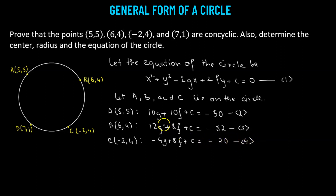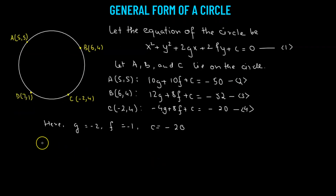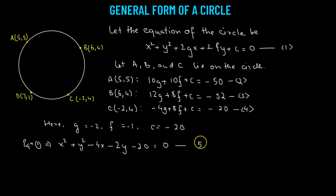Our goal is to determine the values of g, f, and c. This is a straightforward algebraic problem, so I'm leaving the solving as an exercise. The values come out to: g equals negative 2, f equals negative 1, and c equals negative 20. Substituting these back into equation 1, the circle equation becomes x squared plus y squared minus 4x minus 2y minus 20 equals 0. We label this equation number 5.